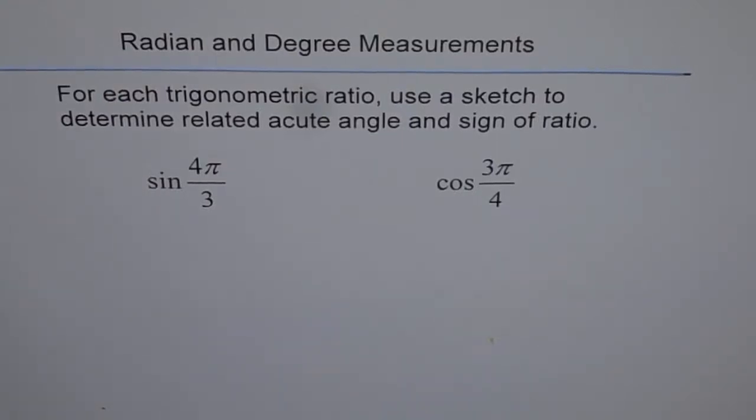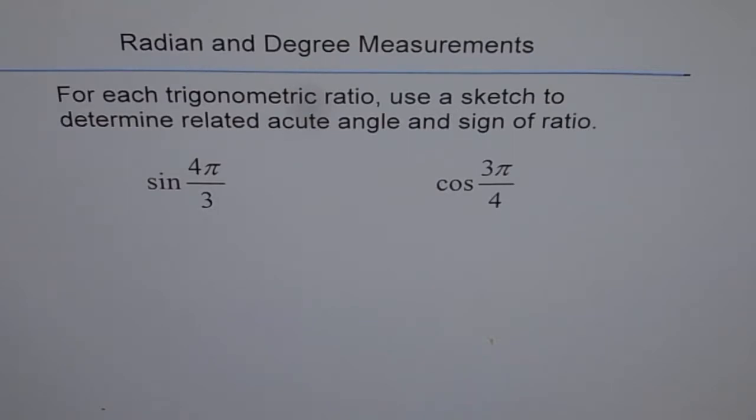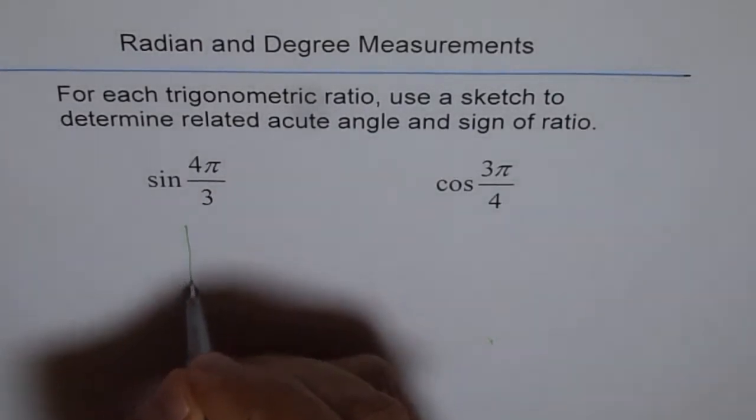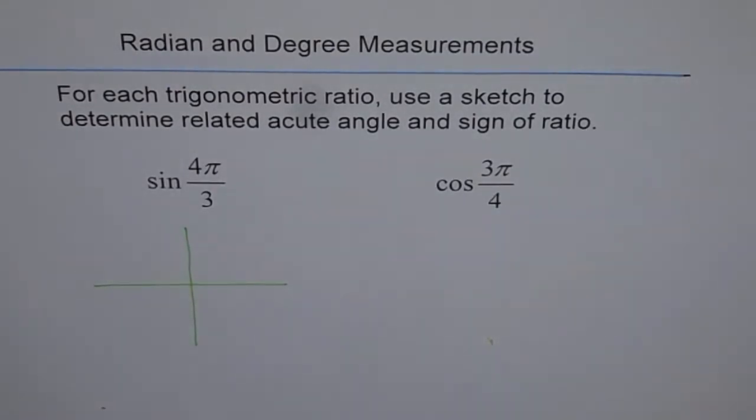Radian and degree measurement and now we are getting into trigonometric ratios. For each trigonometric ratio use a sketch to determine related acute angle and sine of ratio. So let's do sine 4π by 3.